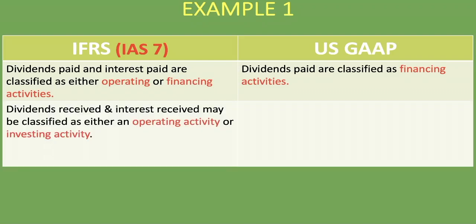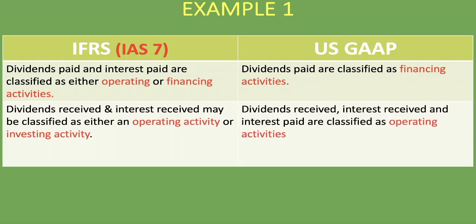What about dividends received and interest received? With IFRS, dividends received and interest received may be classified as either an operating activity or an investing activity, so you have the choice between those two sections. With US GAAP, dividends received, interest received, and interest paid are all classified as operating activities.